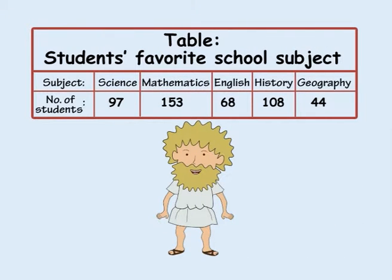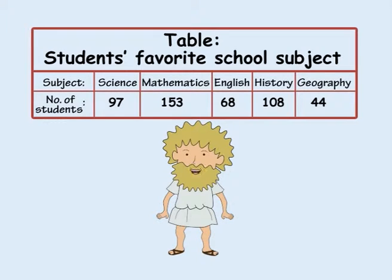A table is a useful way to present the results of a survey that you have carried out. For example, if you ask the students in your school what was their favourite subject, you could present the results in a table. A table must have a title so people reading it can understand what it is about. Also, the numerical data must be clearly labelled so that people can understand the results. How many students chose science as their favourite subject? Ninety-seven.